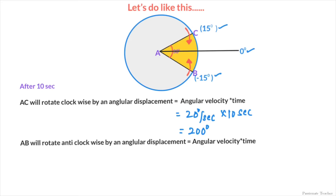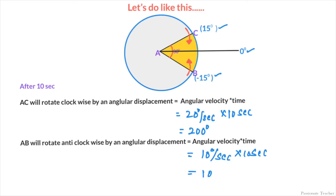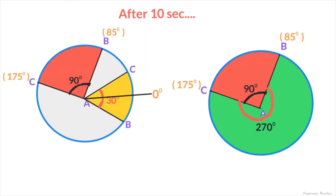Now let's look at AB. AB will rotate in the anti-clockwise direction by an angular displacement equal to angular velocity multiplied by time: 10 degrees per second × 10 seconds = 100 degrees. So overall, AB will rotate anti-clockwise by 100 degrees after 10 seconds. The diagram looks like this.